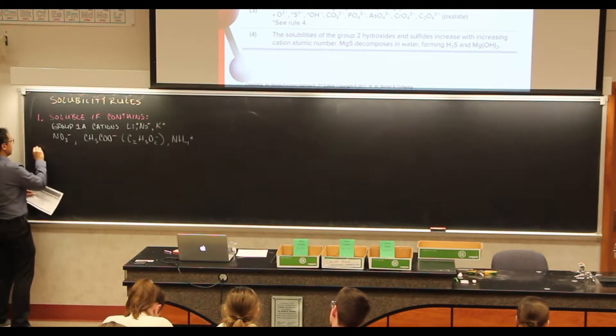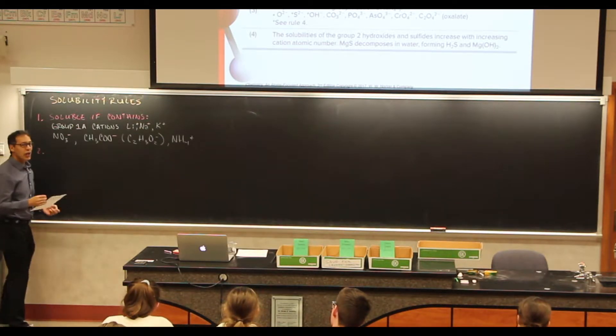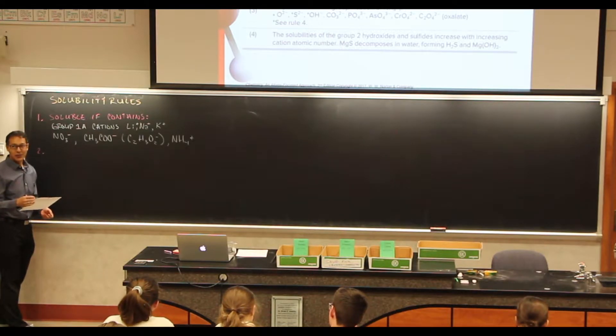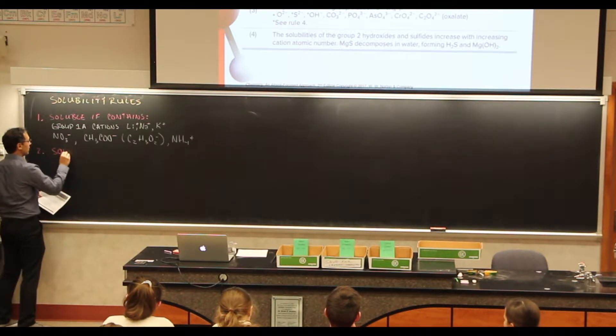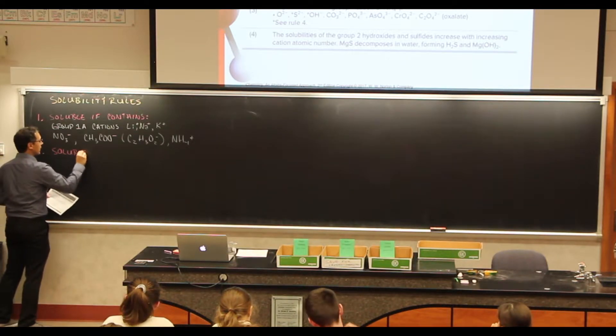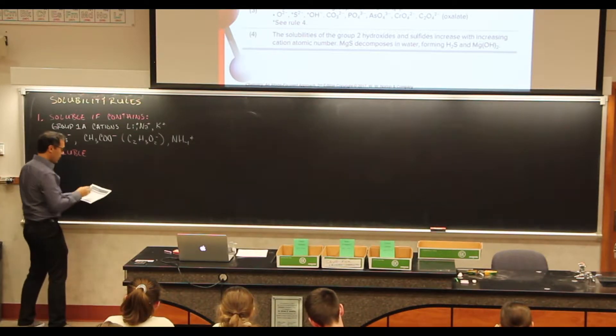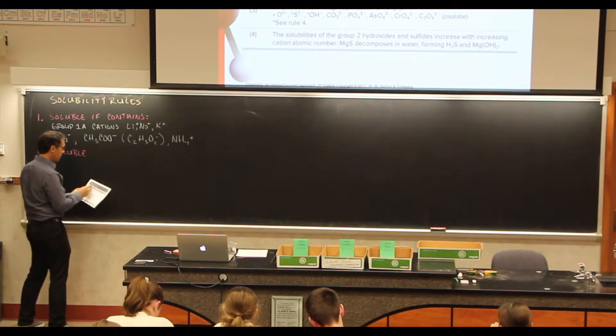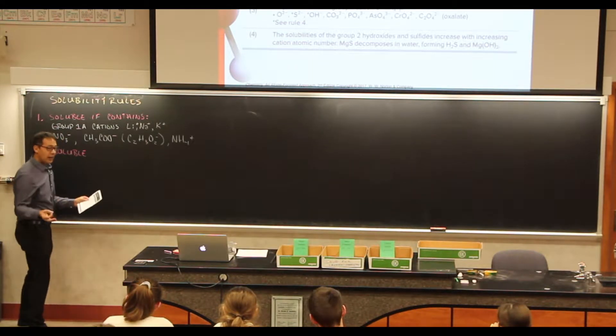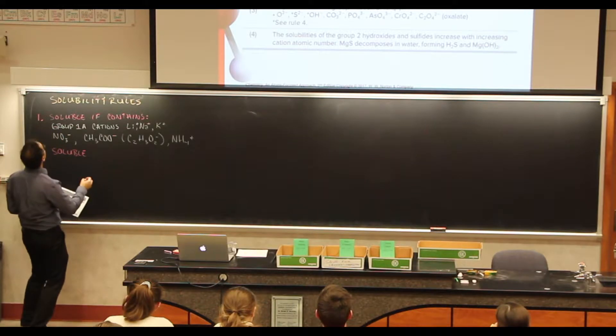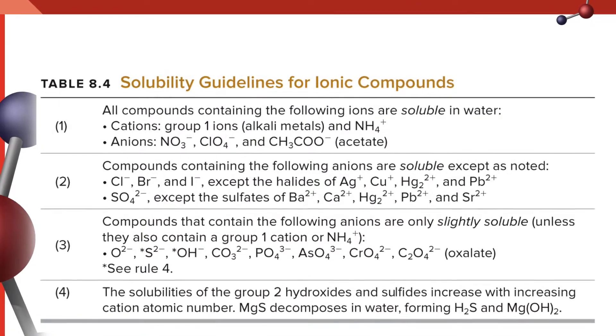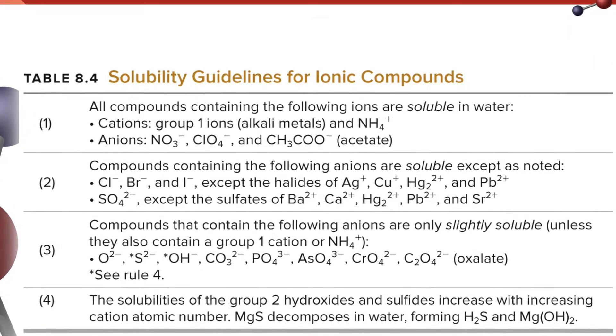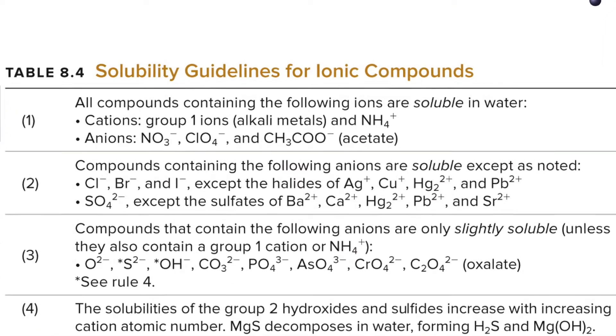And rule number two. These things are soluble, but there's exceptions. So these things are soluble. So our halides, our group 17 elements. So this is things such as chlorine or bromine or iodine.